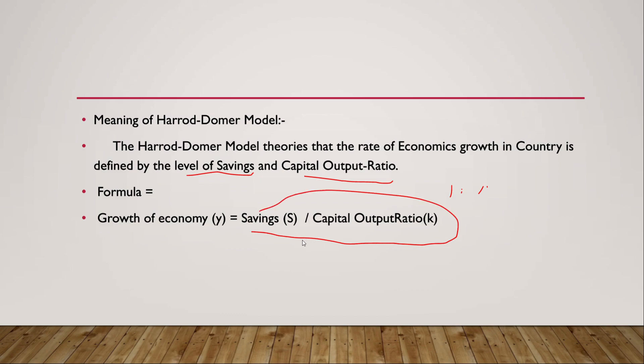So the formula is: savings divided by capital output ratio equals the growth rate of a country. This formula tells us that a country's growth rate increases when savings increase or when the capital output ratio decreases.